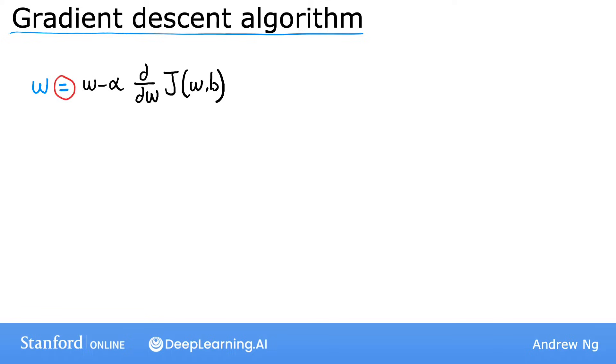First, this equal notation here. Notice I said we're assigning w a value using this equal sign. So in this context, this equal sign is the assignment operator. Specifically, if you write code that says a equals c, it means take the value of c and store it in your computer in the variable a. Or if you write a equals a plus 1,